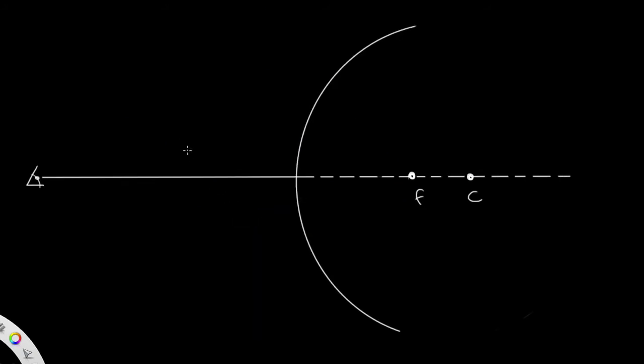So the same technique of ray tracing. We draw our object here in front of the mirror. Now for the first ray, we draw it parallel to the principal axis and it is reflected off the mirror somewhere up here. If we extend this ray back behind the mirror, it goes through the focal point.